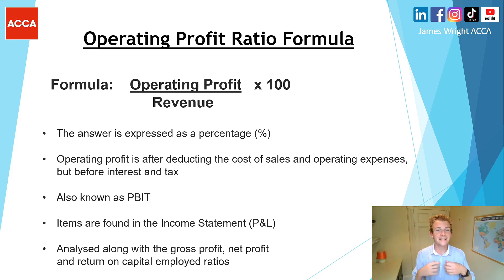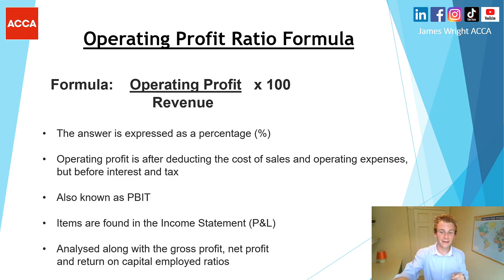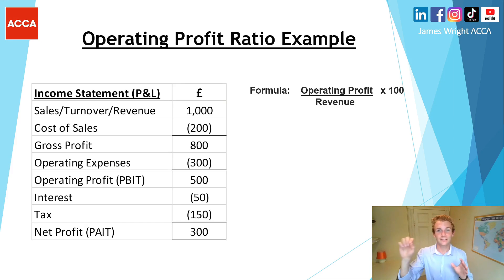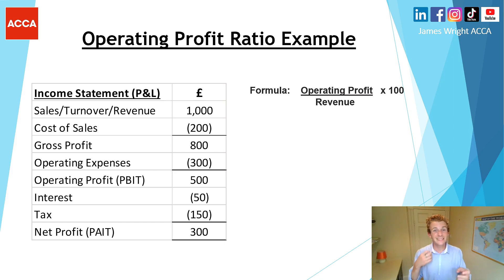All these figures are found in the income statement, also known as the profit and loss. Along with calculating the operating profit ratio, make sure you're also comparing it and linking it to the gross profit margin, the net profit margin, and the return on capital employed ratios — these are really critical areas. I've done videos on all of them on the channel, so be sure to check them out.